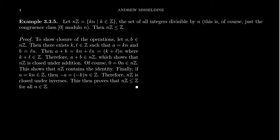Consider the group Z with respect to regular integer addition. We define the set NZ to be the set of all multiples of N, where K can range over all integers. For example, 2Z is all of the even numbers. If we take 3Z, we're taking multiples of 3: 0, 3, 6, 9, negative 3, negative 12, and so on.